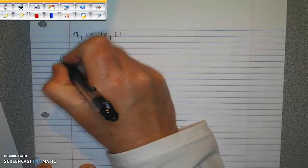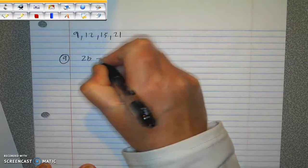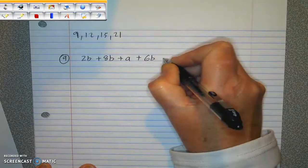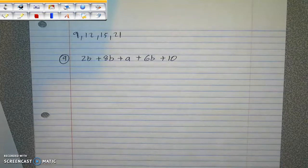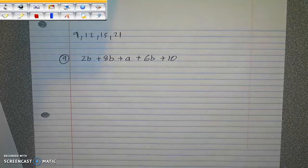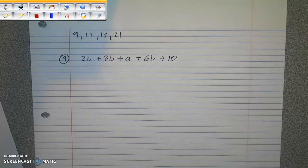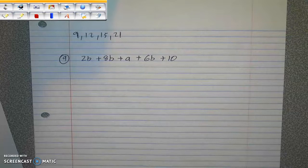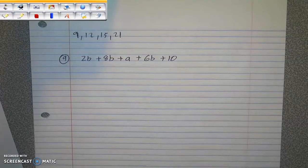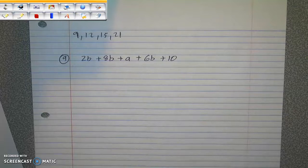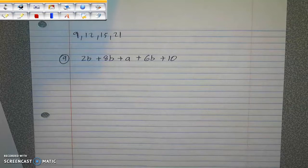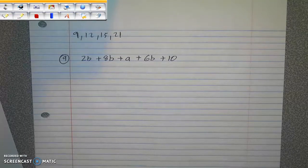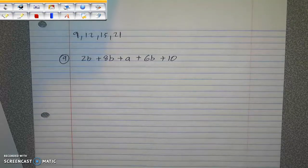Number 9 is 2B plus 8B plus A plus 6B plus 10. What you want to do here is combine the terms that are alike, and terms that are alike have the same variable and they have that variable to the same power. In this particular expression, we don't have any squares or cubes to worry about. So basically we're gathering all the terms that have the variable B together, gathering all the terms that have the variable A together, and gathering all the constant terms together. Constant terms are terms that do not have a variable.